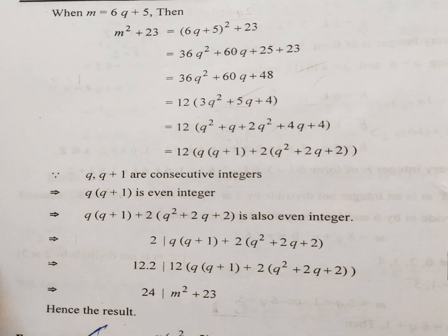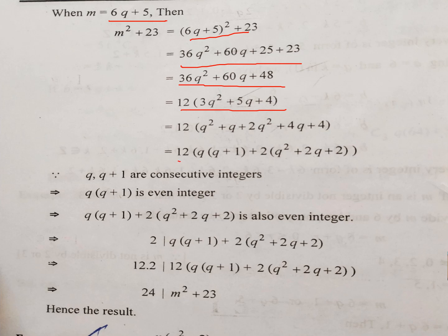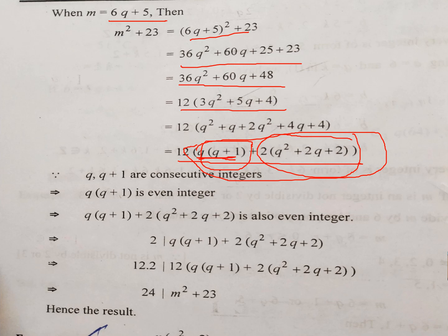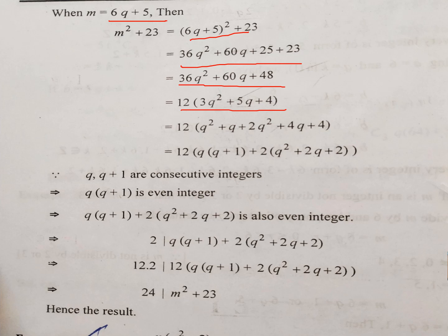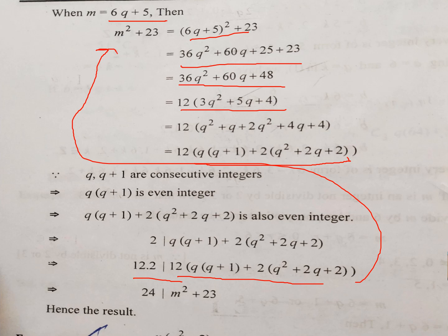For the second case, take m equals 6q plus 5, square it, open the bracket, simplify, and take 12 common. We again identify a product of two consecutive integers, which is divisible by 2, so the whole expression is divisible by 2. Multiplying both sides by 12, we get 24 divides m squared plus 23. So we have proved that when m is not divisible by 2 and 3, 24 divides m squared plus 23.